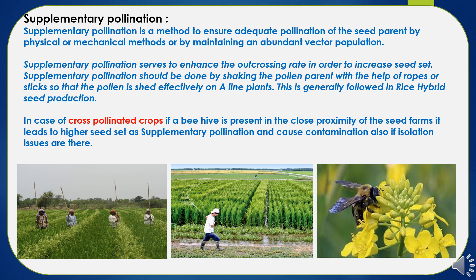Supplementary pollination refers to additional pollination. It is a method to ensure adequate pollination of the seed parent by physical or mechanical methods or by maintaining an abundant vector population. It is achieved by different practices as per the flowering behavior and flower morphology of the crop. Supplementary pollination serves to enhance the outcrossing rate to increase seed yield of the seed parent. It should be done for seven to ten days during flowering, and frequency is important for higher seed setting.